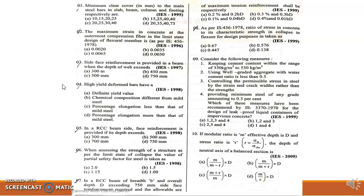Moving to fourth question: High yield deformed bars have. Options are: definite yield value, chemical composition different from mild steel, percentage elongation less than that of mild steel, or percentage elongation more than that of mild steel. The answer is option C because the bars have lesser percentage of elongation.